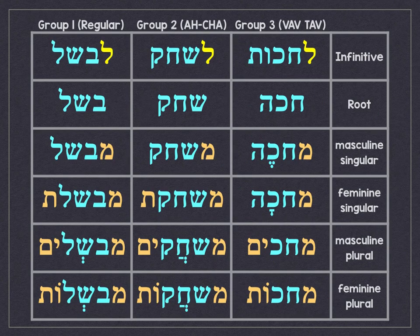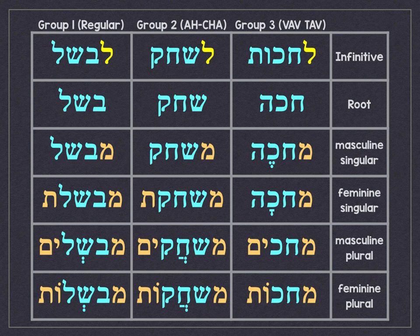Now let's see all three Pi'el verb groups side by side. The regular group, the Acha group — where the middle root letter is Aleph, Hei, Chet, or Ayin, giving an additional A sound in the masculine and feminine plural. And now the Vav-Tav group, where we convert the final Vav-Tav to a Hei to get the last root letter, with sound patterns M'A'eh, M'A'ah, M'A'im, and M'A'ot — as in M'Chakeh, M'Chaka, M'Chakim, M'Chakot.